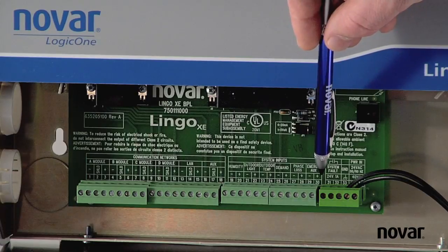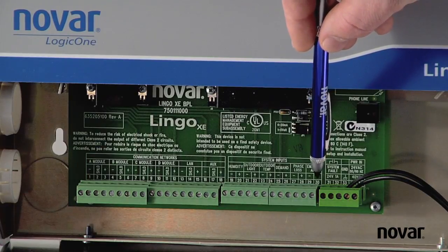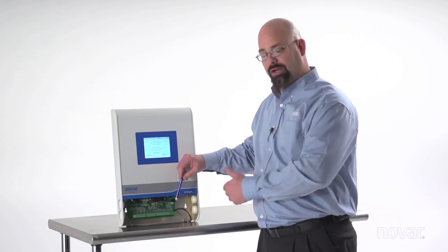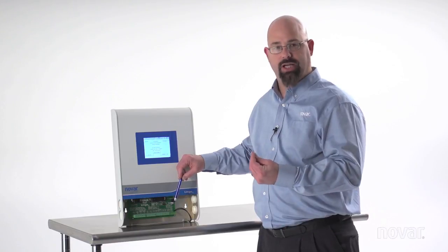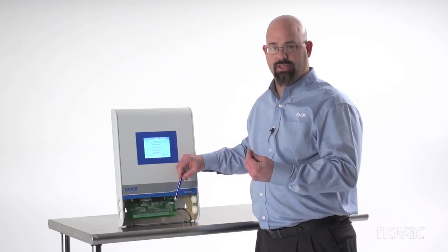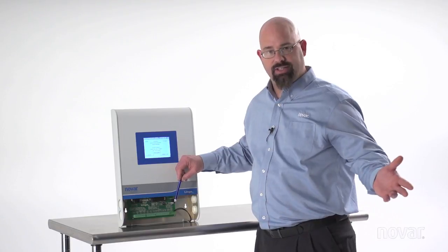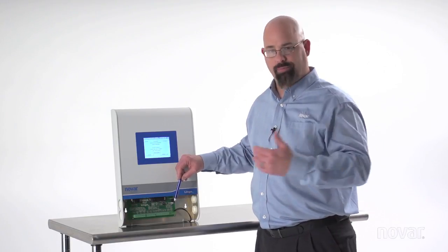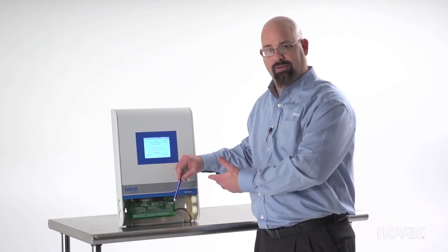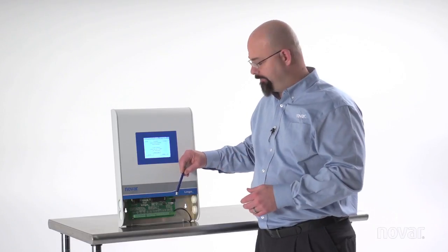To the side of that I've got a fault relay. All that is is a normally open relay. When this Lingo XE is in normal operation he holds that closed and if he fails for any reason that relay just fails open. The other end of that signal will be another control system that can report for this guy because he's apparently got no power. That's why the relay failed open.